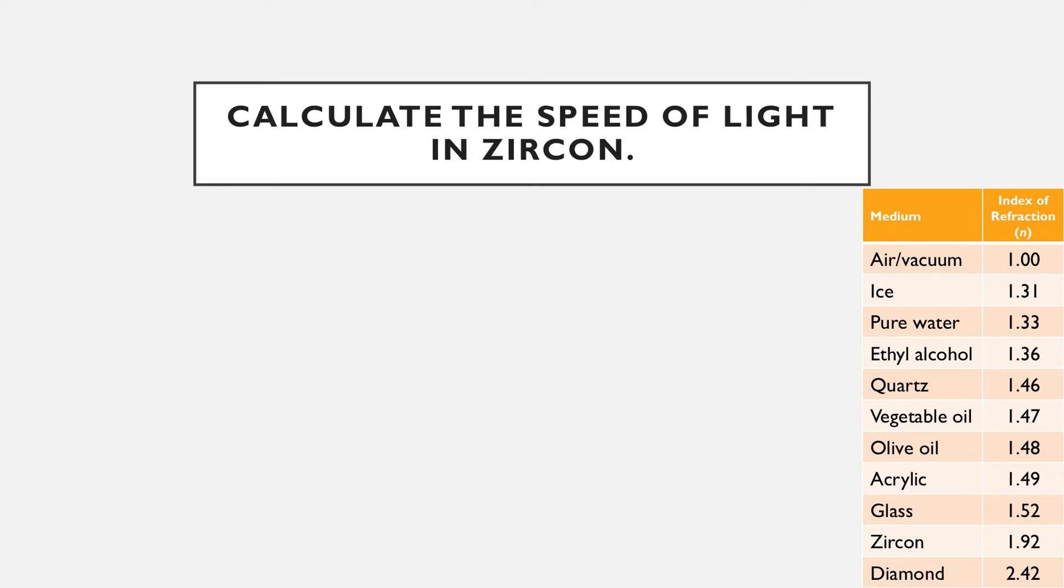This next question is asking us to calculate the speed of light in zircon. So we're going to write out everything we know, which really isn't much to start with. We know c is equal to 3.00 times 10 to the 8 meters per second. That's pretty much it in terms of what the question gives us. So let's consult our table over here on the right. And we can see here, there is zircon. And it tells us that the n value is 1.92. So n equals 1.92. Let's identify our unknown, which is going to be the speed of light, so v. And then let's rewrite our equation, n equals c over v.